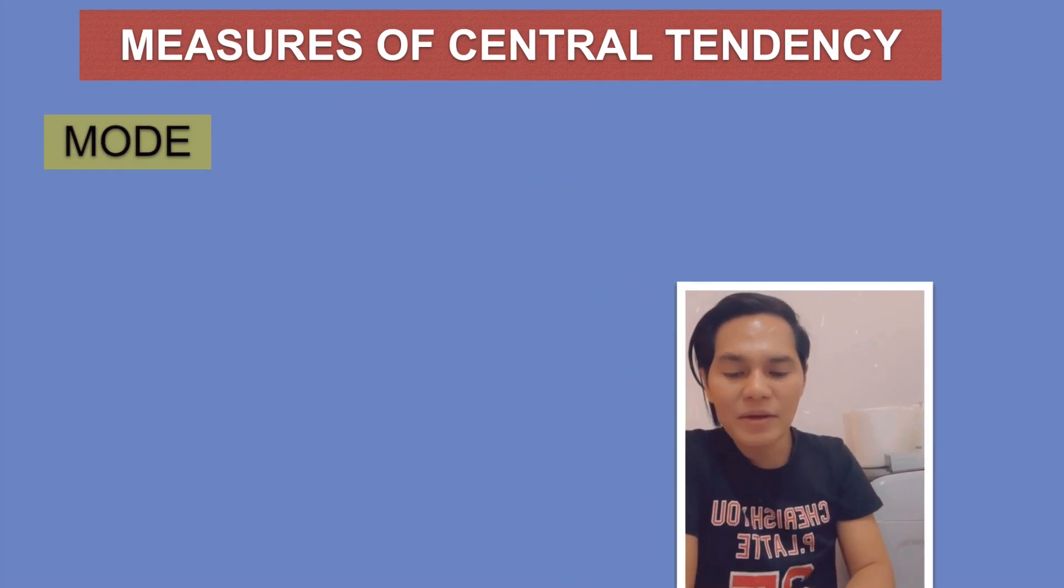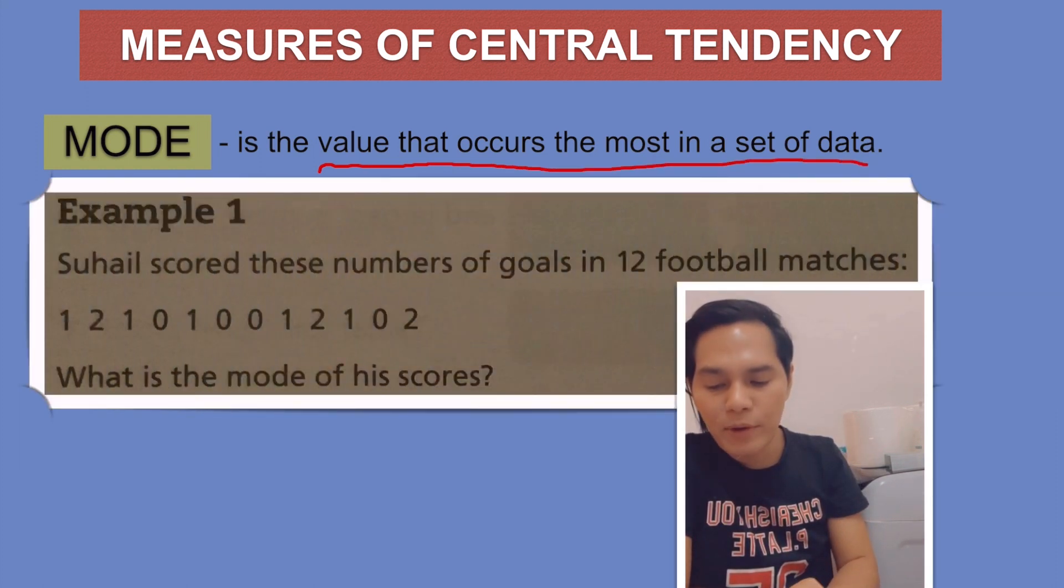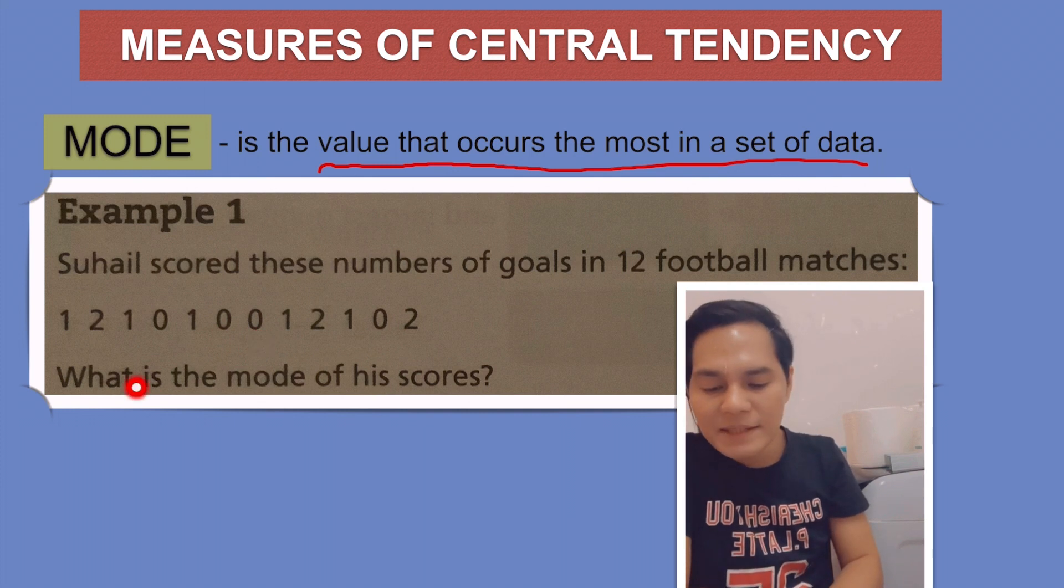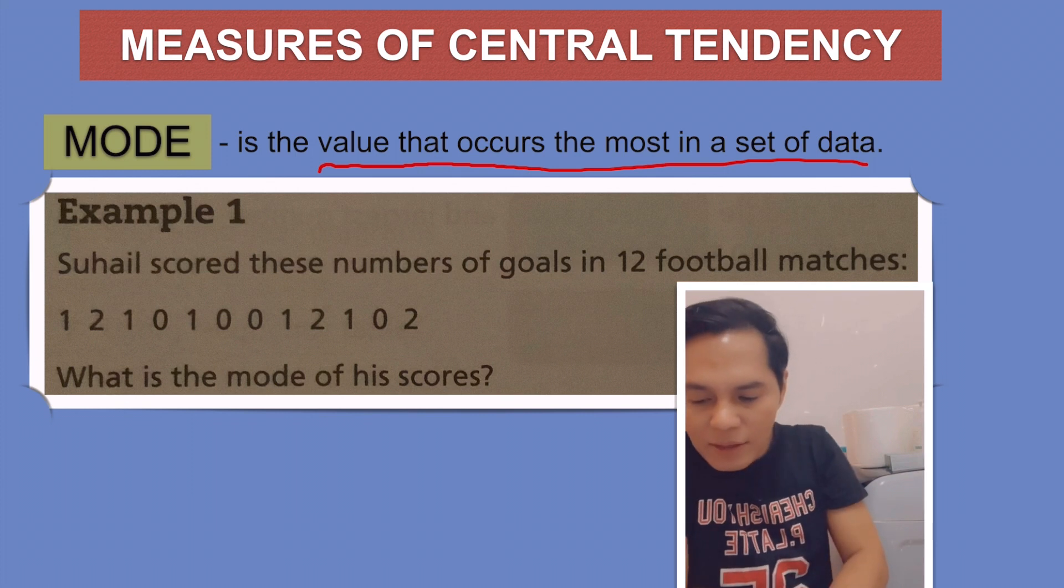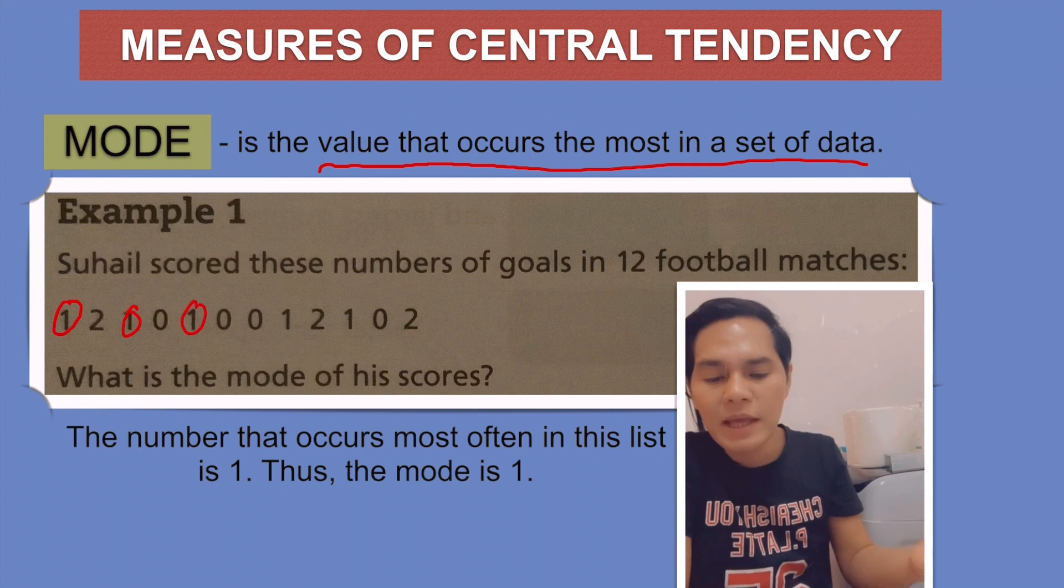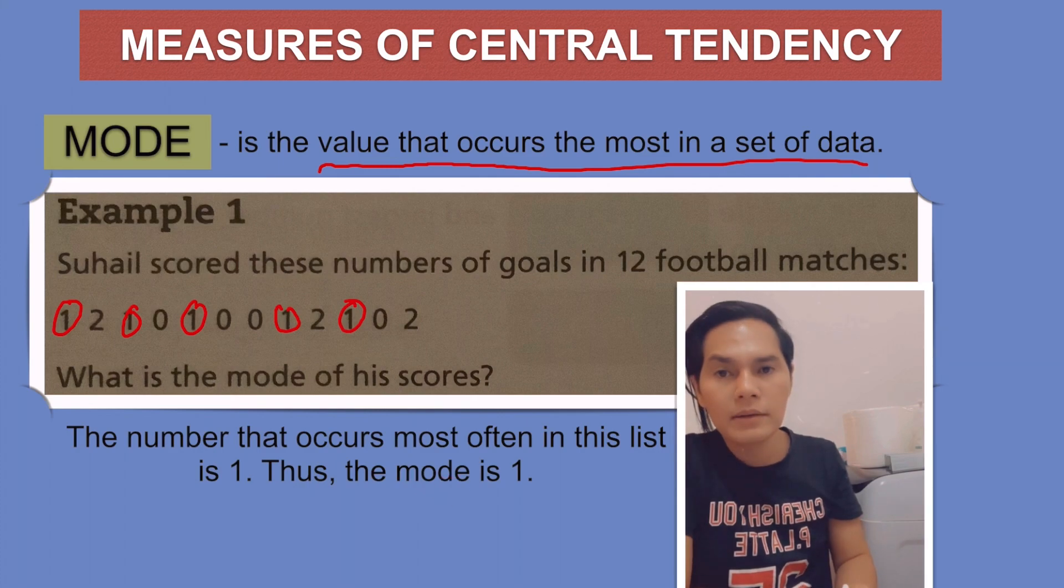Mode is the value that occurs the most in a set of data. For example, Suhail scored these numbers of goals in 12 football matches: 1, 2, 1, 0, 1, 0, 0, 1, 2, 1, 0, 2. What is the mode of his scores? Check this out. One is being repeated here five times. This is the most number of repeats in the given data. Therefore, the number that occurs most often in the list is 1. Thus, the mode is 1.